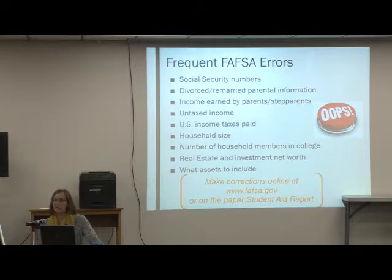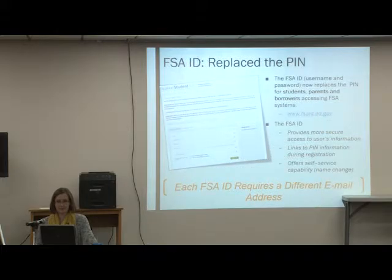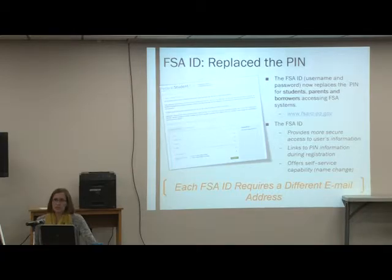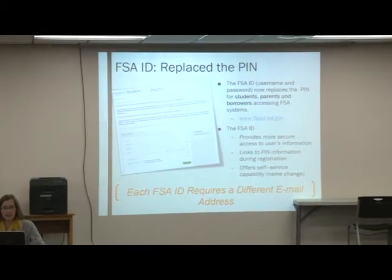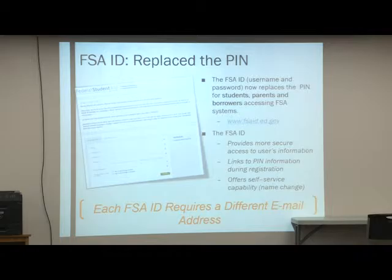For 17-18, students will be able to use 2015 tax information again rather than 2016. The FAFSA is available January 1st, but most people are not going to have their tax information ready then. You could use estimates and submit January 1st, then go back and update once you've filed. As long as none of the exclusions apply, you should be eligible to use the IRS data retrieval tool. It's a great tool that makes things easier for students, especially in reducing documents they'll need to provide later.